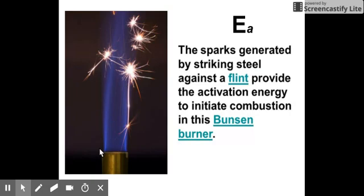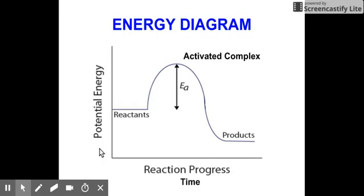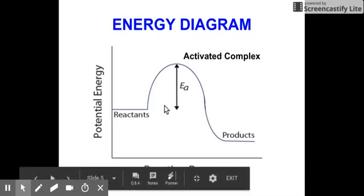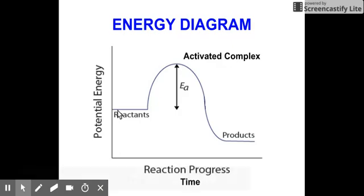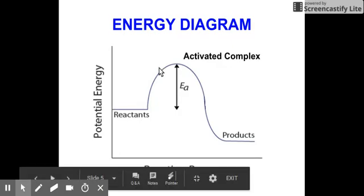So how is EA represented? It's represented through an energy diagram. In an energy diagram, the X axis is the reaction progress, which is unit time — as you move from left to right, the reaction is taking place over time. The Y axis is your potential energy, which increases from bottom to top. The curve always begins with the initial energy of your reactants, and then moves up until it reaches a maximum energy requirement.